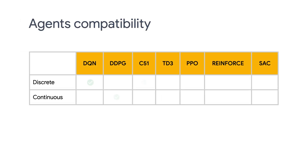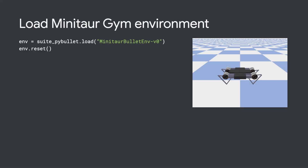TF Agents have a number of built-in agents available, but you should take note that different agents support different problem types. For example, DQN and Reinforce don't support continuous control, and SAC doesn't support discrete control. Make sure you choose the right agent for your own task. In our previous episodes, we were using the driver to collect the experience and then train the agent. This time, we're going to use a new Actor Learner API. The reason we want to use this new API is to support distributed training, which we will get into at the end.